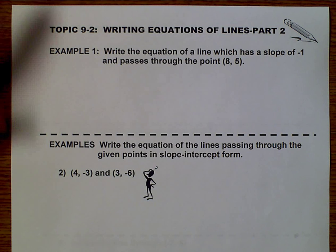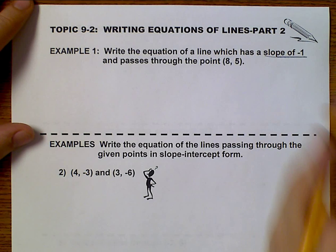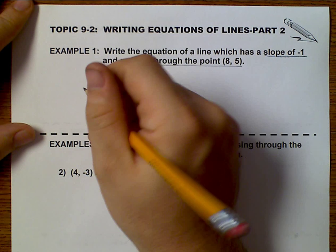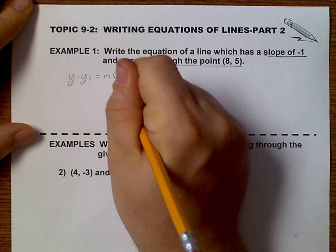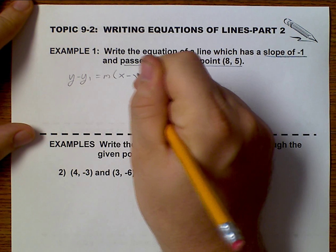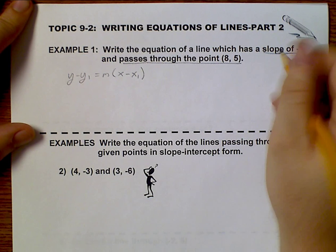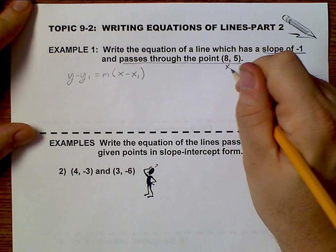For example number 1, we have a slope of negative 1, and we go to the point (8, 5). We want to use point-slope form, which is y minus y1 equals m times x minus x1. Slope is my m. This is my point, x1, y1.